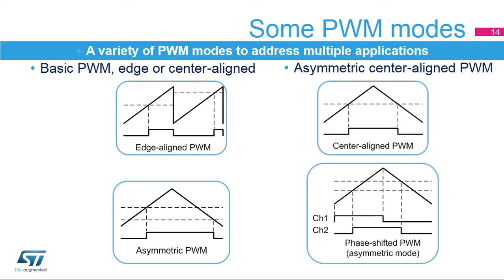The standard edge-aligned PWM mode is programmed with the auto-reload register defining the period and the compare register defining the duty cycle, with the counter in up-only or down-only counting mode. A single timer can generate up to four PWM signals with independent duty cycles and identical frequency. In edge-aligned mode, all falling edges occur at the same time. In center-aligned mode, the counter is in up-down mode, and switching time varies with the duty cycle. This mode spreads switching noise and is key for three-phase PWM generation for electric motor drives, doubling the frequency of the current ripple for a given switching frequency.